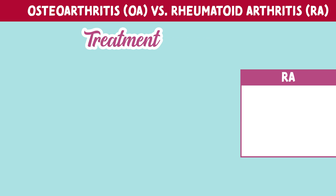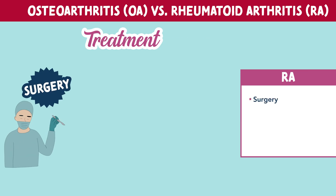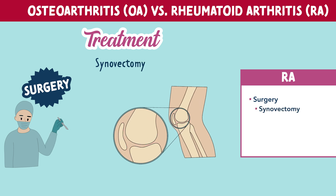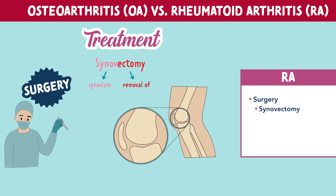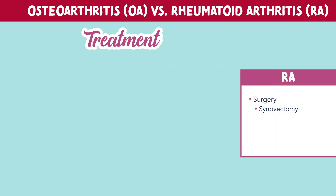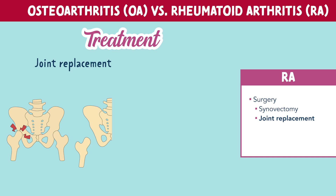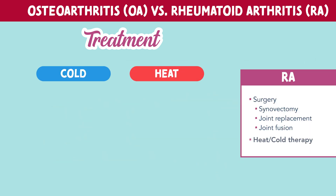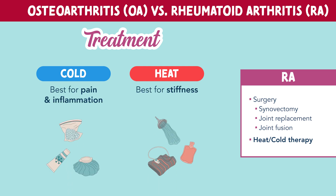Now let's look at treatment for RA. When it comes to rheumatoid arthritis, surgery is a main treatment for relief. A synovectomy may be performed — this is removal of the synovium; synov means synovium and ectomy means removal of. The goal is to reduce inflammation and stop progression. Patients may also qualify for a joint replacement, arthroplasty, or joint fusion, also called an arthrodesis. Heat and cold therapy are also helpful — cold therapy is best for pain and inflammation, while heat is best for stiffness.